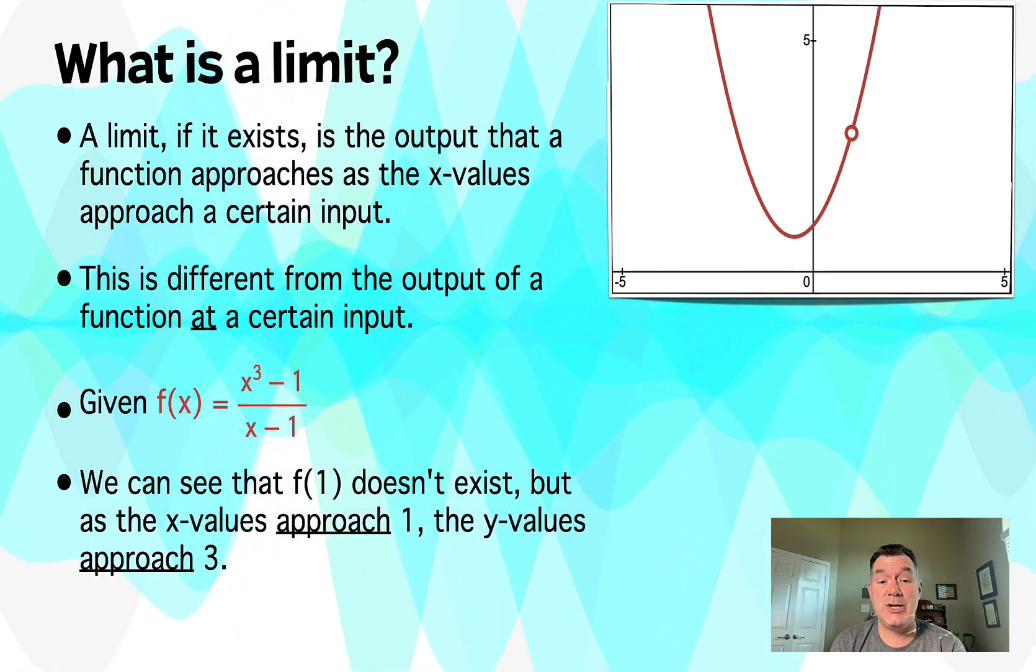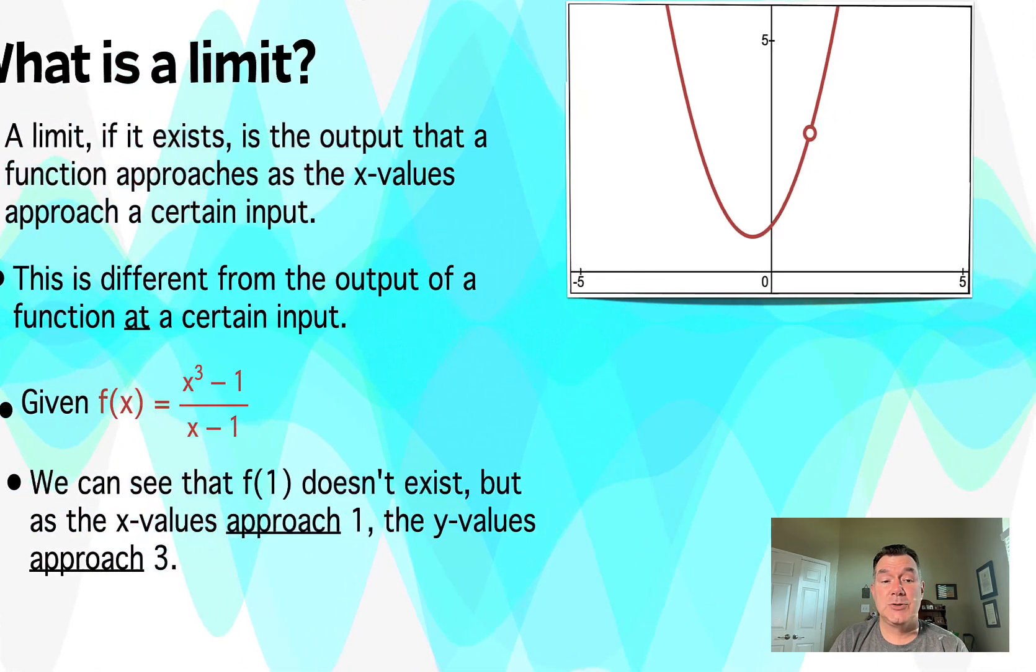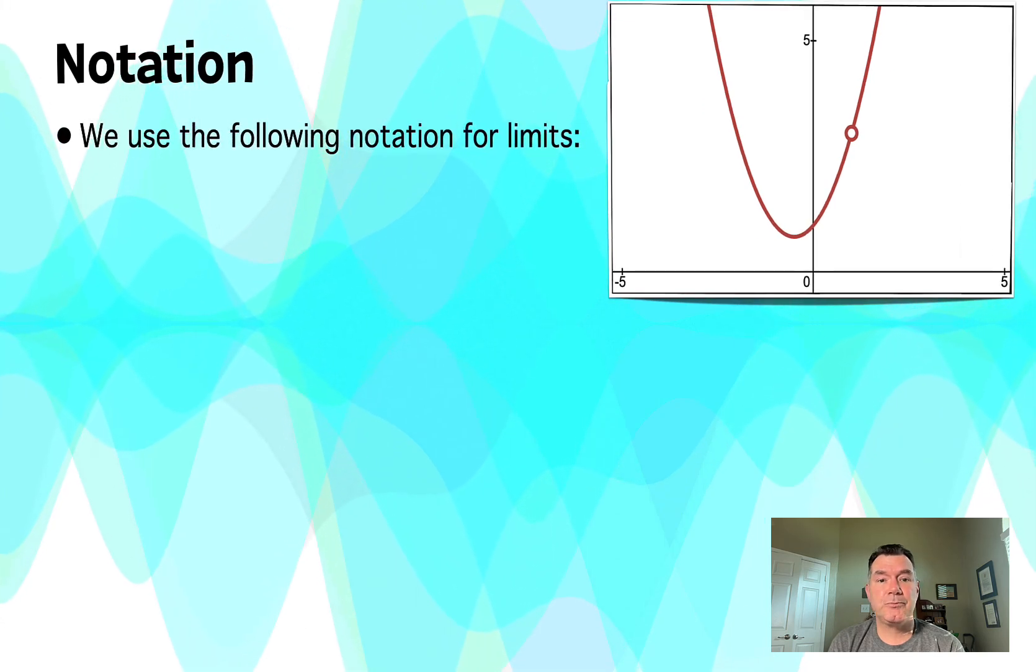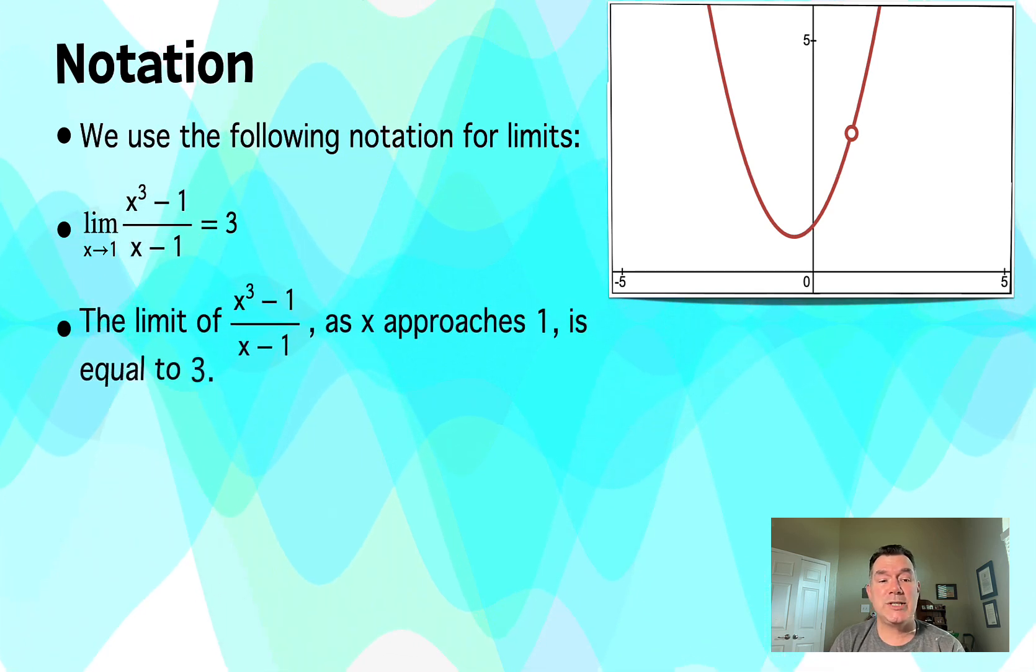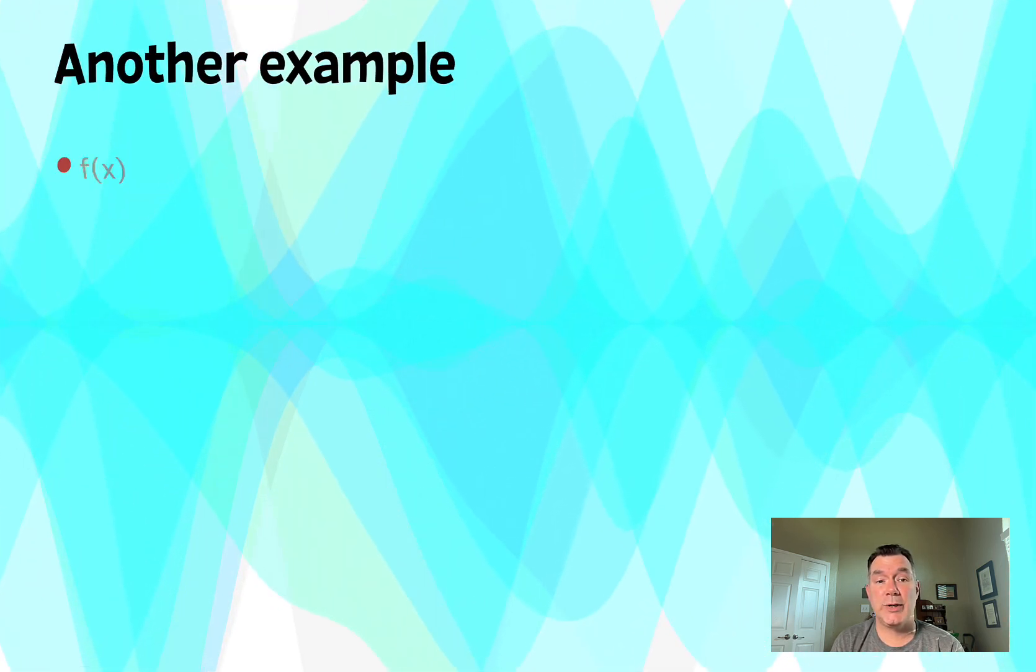But if I look at the graph near x = 1, I can see that the y-values approach y = 3. So that would be considered the limit in that case. Here's how we express that limit. We write it in this notation and what we say is that the limit of our function as x approaches 1 is going to equal 3, meaning that the y-values do approach 3. So let's look at another example.